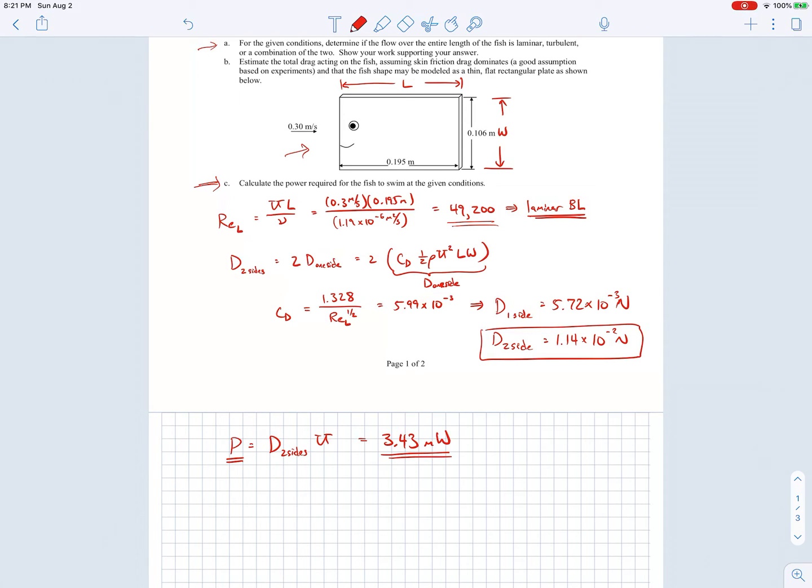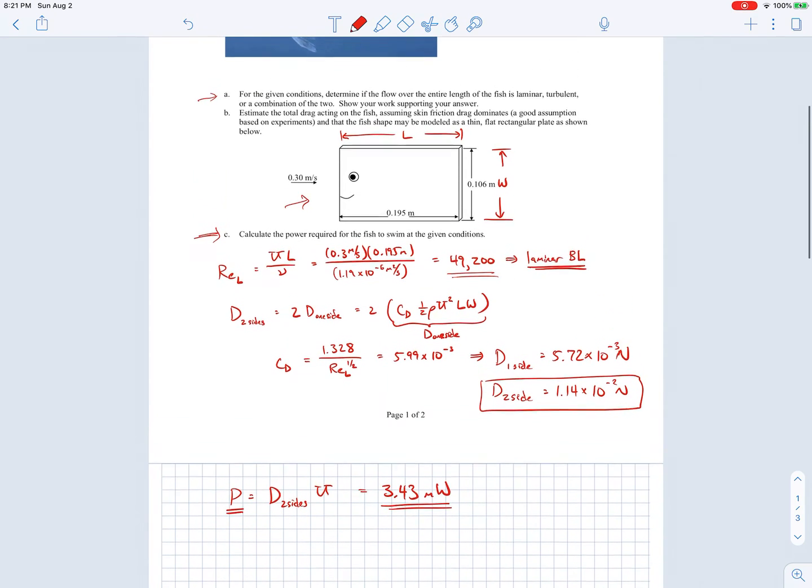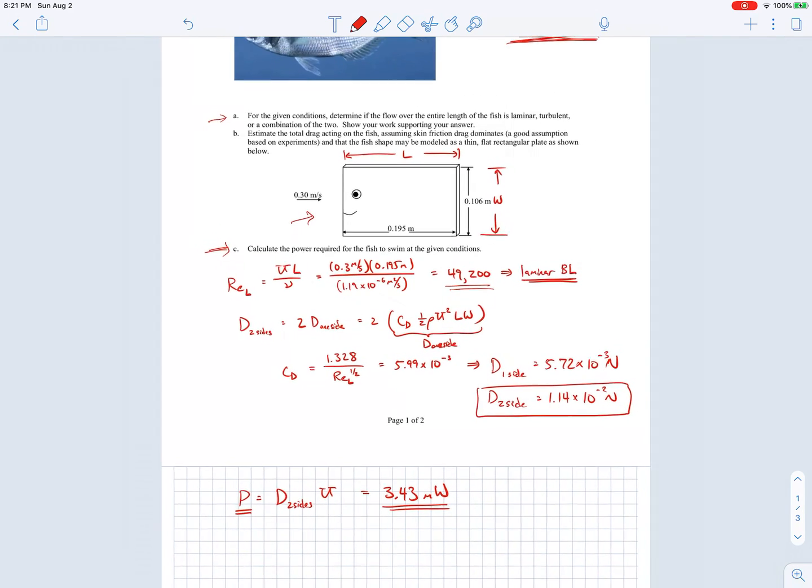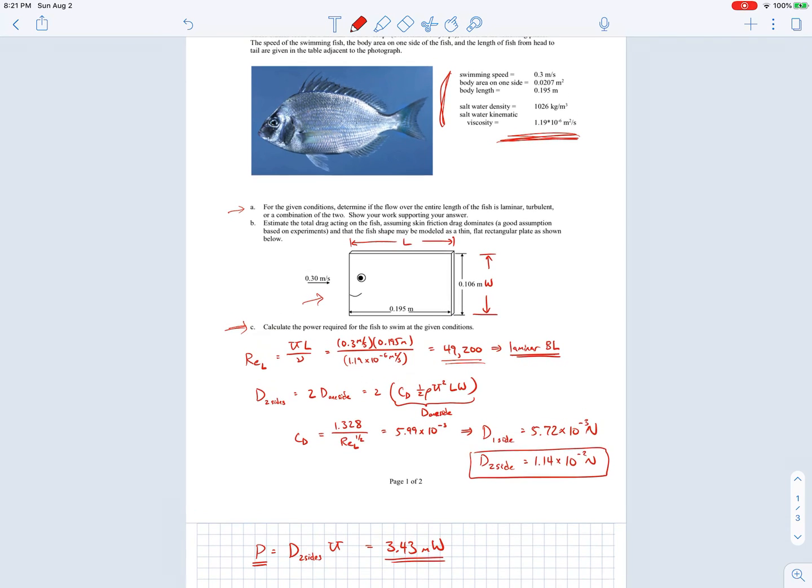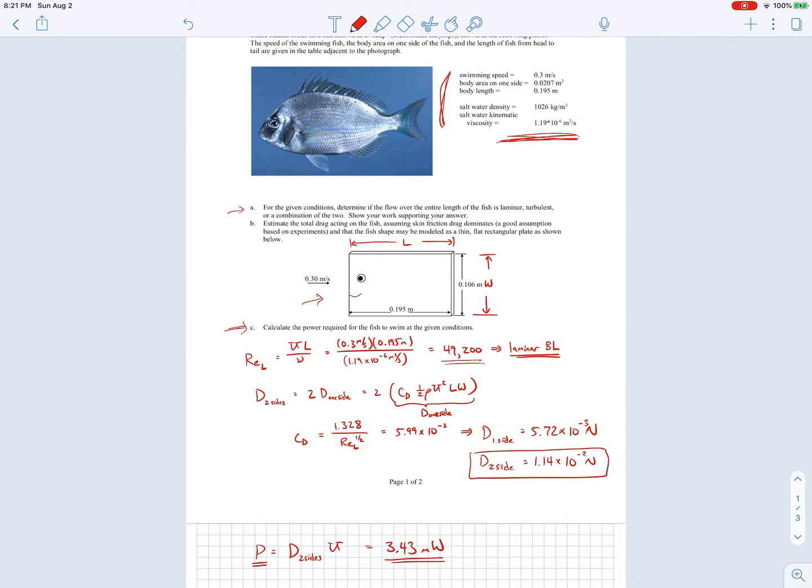Not a lot of power, which makes a lot of sense because if it required a lot of power for the fish to swim then it would have to eat quite a bit, which wouldn't be advantageous evolutionarily speaking. That's just a very rough back of the envelope calculation for the drag and the power required for the fish to swim.